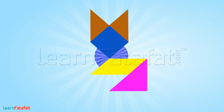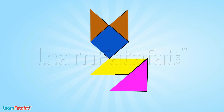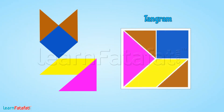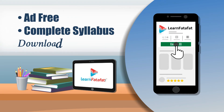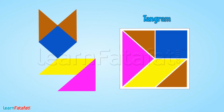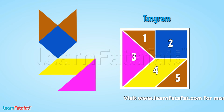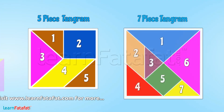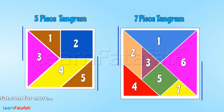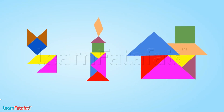Now look at this design. It is made up of different shapes. This design is made with the help of a tangram. There are five pieces in this tangram, so it is called a five-piece tangram. There is also a seven-piece tangram. These tangrams are used to make different designs.